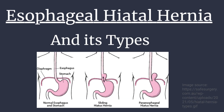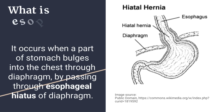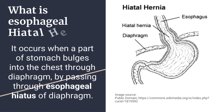Esophageal hiatal hernia and its types. What is esophageal hiatal hernia? It occurs when a part of the stomach bulges into the chest through the diaphragm, by passing through the esophageal hiatus of the diaphragm.